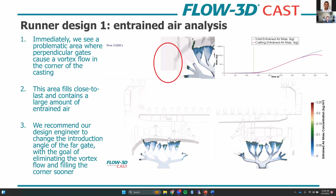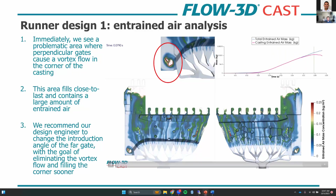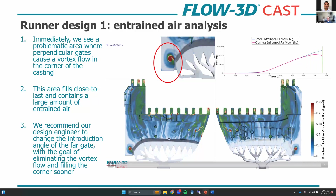So immediately, when we look at our first model of our first runner design, we see a problematic area down in the bottom left corner where the flow from these two perpendicular gates creates a vortex, making that area fill close to last. And once it does fill, it has a lot of entrained air, which would make it a pretty good hotspot for potential porosity. So we're going to head back to our designer and have him change the introduction angle of that far runner so that it coincides less perpendicularly with its neighboring gate.